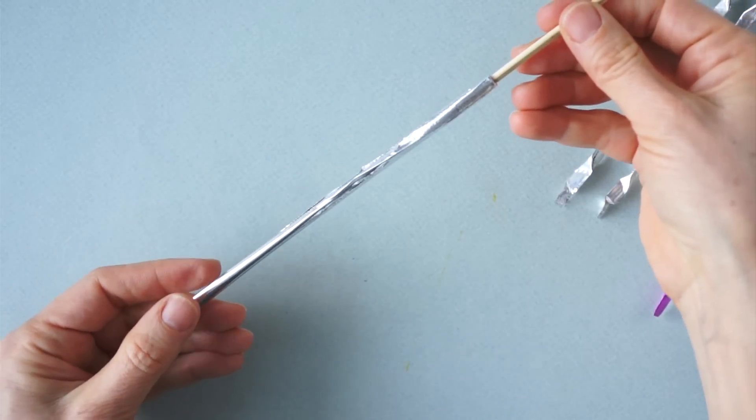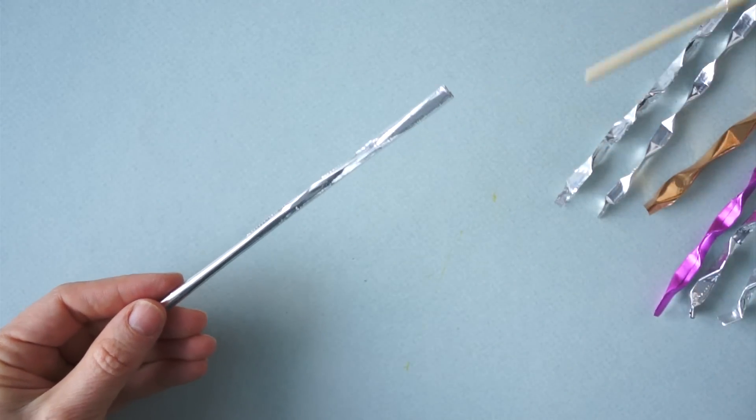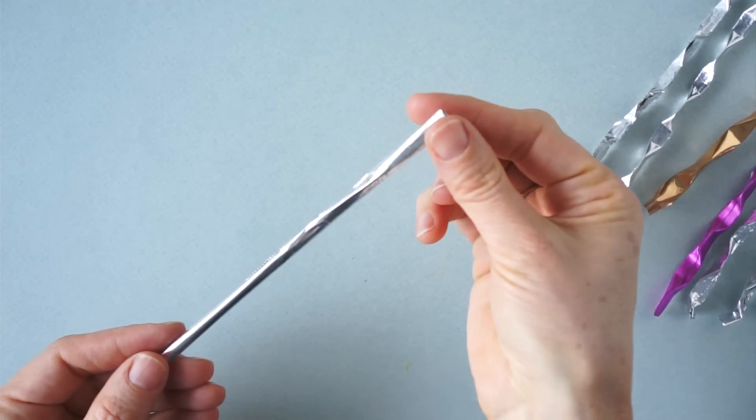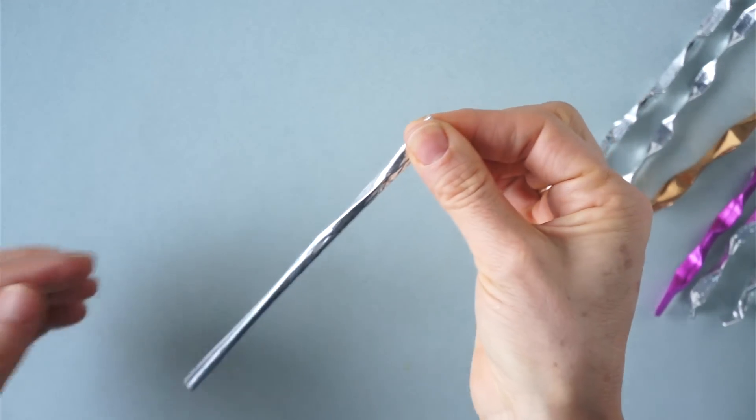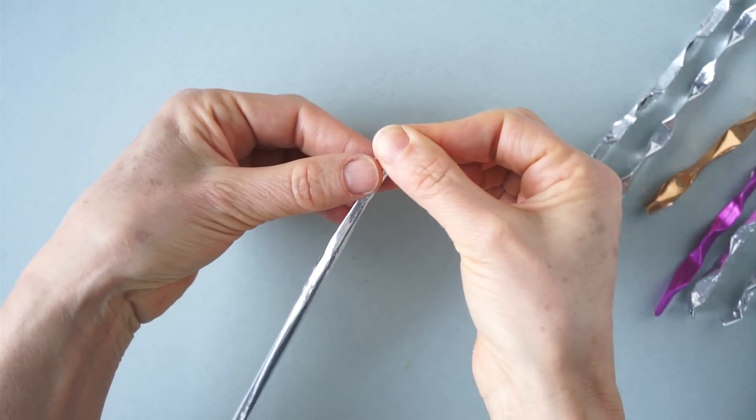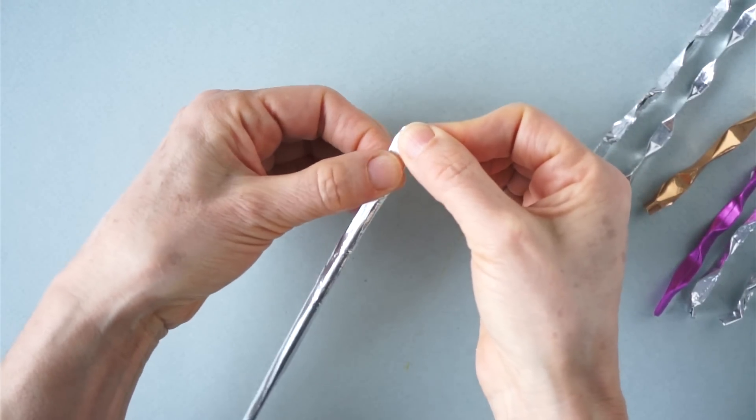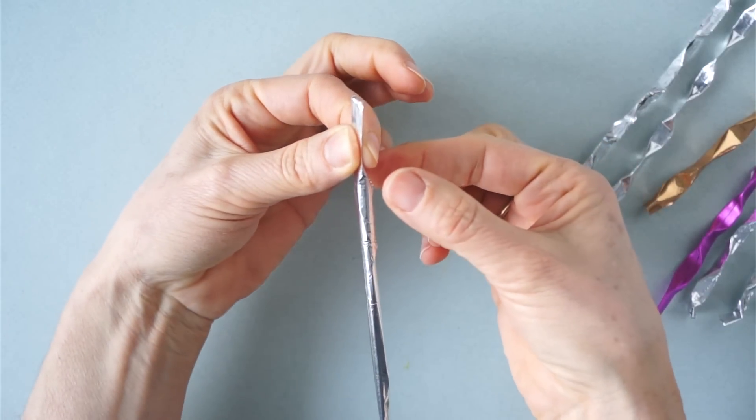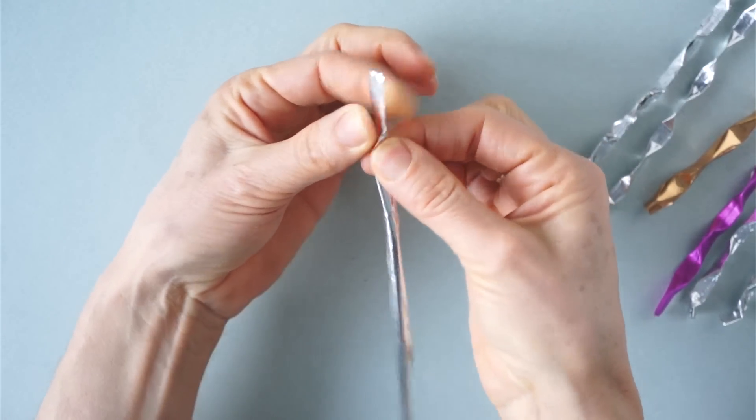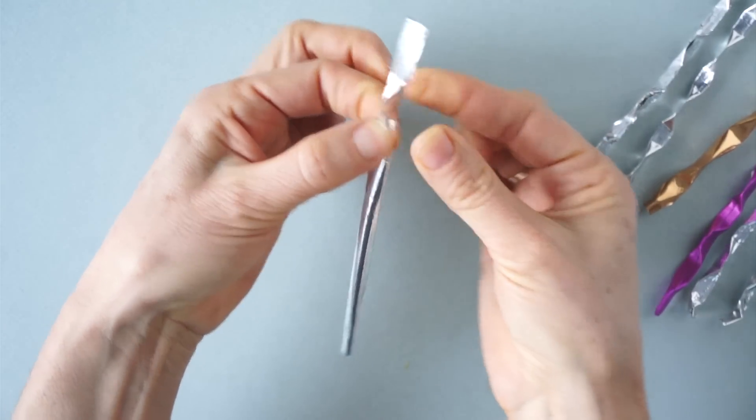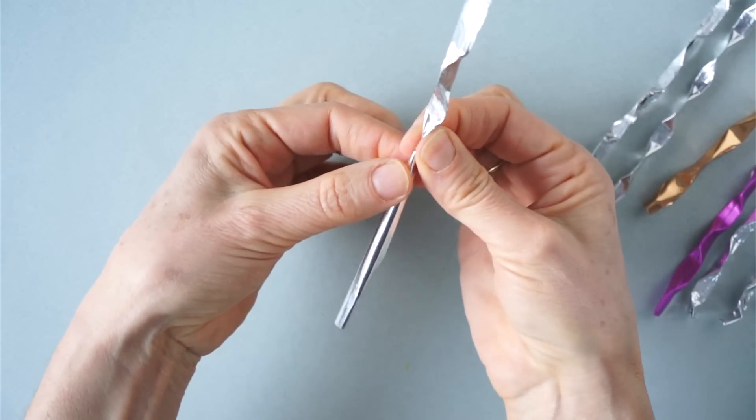Once we're here we're going to remove the skewer. Flatten the edge. Flatten an equal section just below and in the same direction. Then we're going to flatten in the opposite direction and move all the way down.